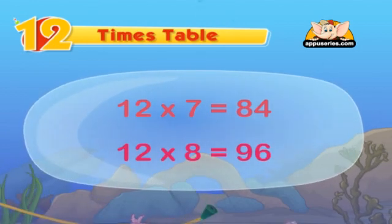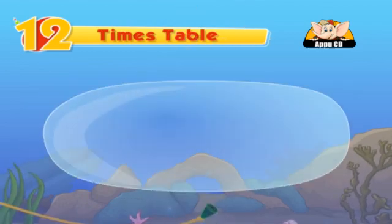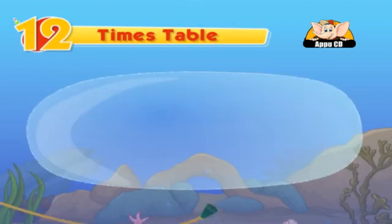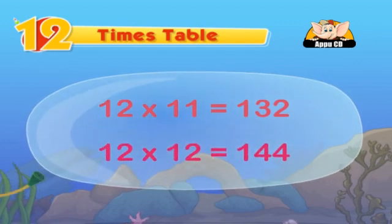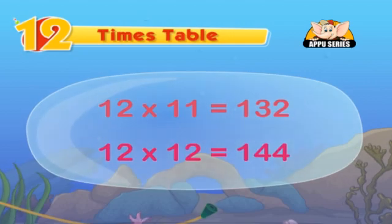You will then never get mixed up. 12 nines are 108, 12 tens are 120, 12 elevens are 132, 12 twelves are 144. That's how the times table can be so much fun! You have learned the 12s table today.